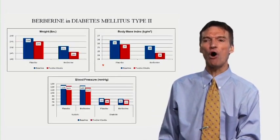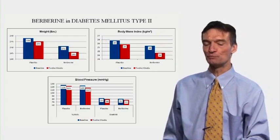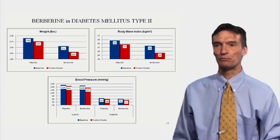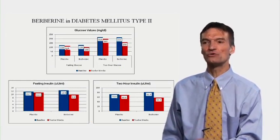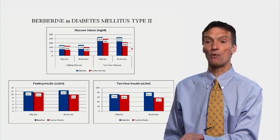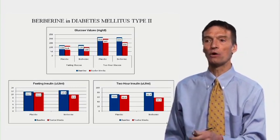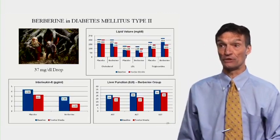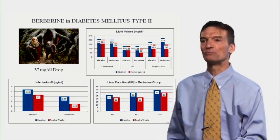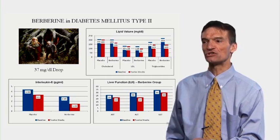In both groups, weight falls — maybe a little bit more with berberine. Diet and exercise did have some effect. BMI falls by one point in both groups. Blood pressure falls in both groups, systolic a little more with berberine. Glucose values fell 7 points with placebo, 15 points with berberine. Post-meal glucose falls with both groups, much more with berberine. Fasting insulin is not affected by diet and exercise; it drops if you add berberine. Two-hour post-glucose load insulin also falls more with berberine. A 37-point cholesterol drop, lowering risk by about 20%; with placebo not much happens, but a lot happens with berberine. LDL and triglycerides fall more with berberine.